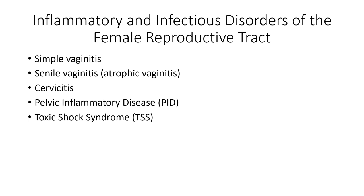Patients who have had TSS before should not use tampons. Instruct patients to wash hands thoroughly before and after tampon insertion. Advise women who are menstruating and develop a high fever with vomiting or diarrhea to remove the tampon immediately and seek emergency medical attention. The patient problem associated with TSS is inadequate fluid volume related to vomiting and diarrhea.